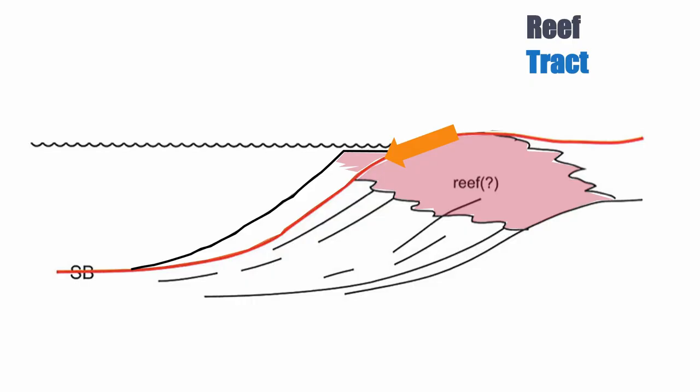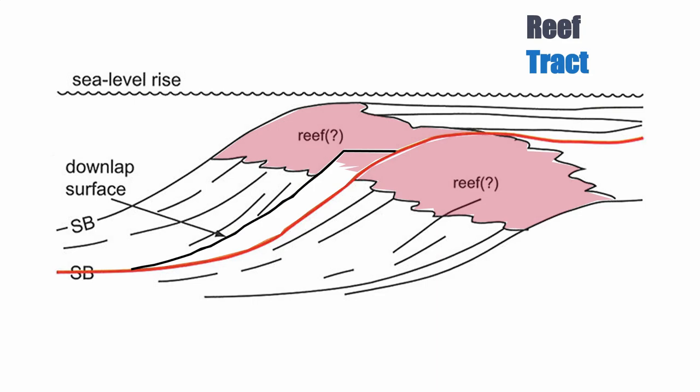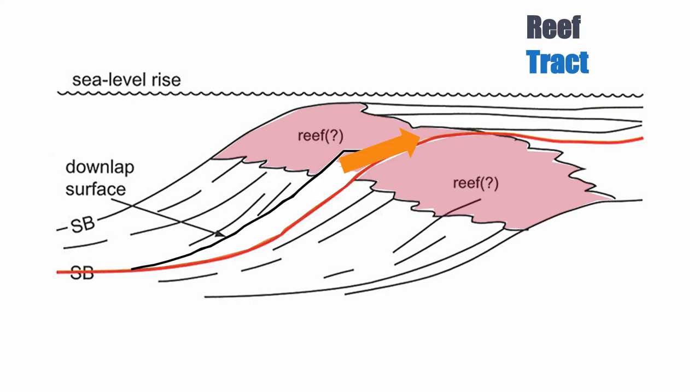The really interesting thing for carbonates is that we can preserve both the highstand and the lowstand, because carbonates are lithified and tend not to be re-sedimented during lowstand. Looking at the lowstand wedge, we see progradation, because there's not a lot of space for carbonates to grow — the carbonate factory is relatively small, but it still outpaces accommodation change. When base level goes back up, the next cycle starts with retrogradation of the facies, followed by progradation and aggradation.